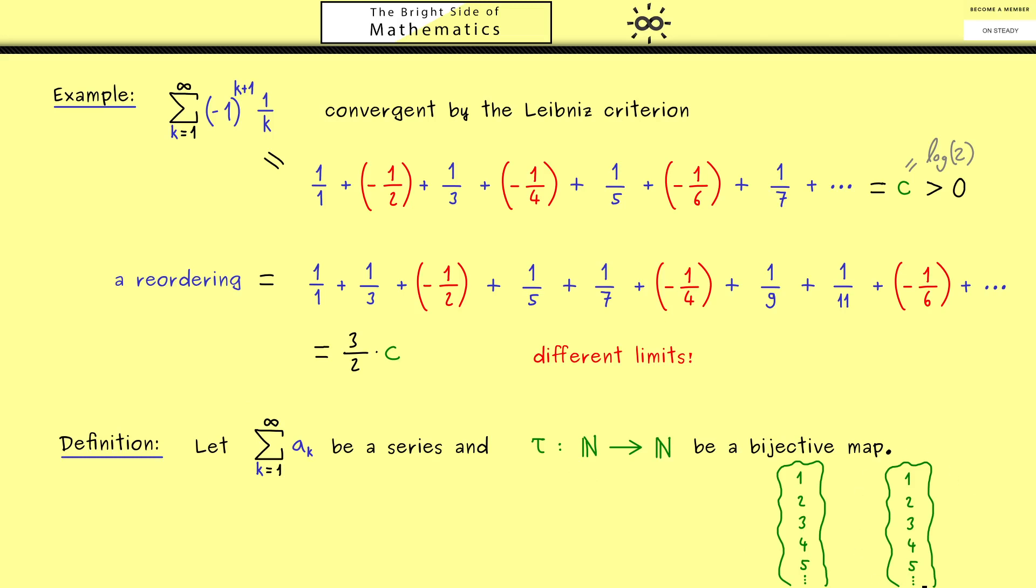The visualization for this map tau is that it is our reordering, where we have the old indices on the right and new indices on the left. For example, the new index 1 could correspond to old index 3. The important thing is we have a 1 to 1 correspondence between old and new indices, exactly given by the term bijective. The new series where we put in tau k as the index is called a reordering of the original series.